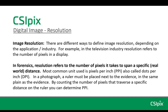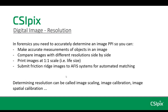In a photograph, a ruler must be placed next to the evidence in the same plane as the evidence, and then by counting the number of pixels that traverse a specific distance on the ruler, you can determine the PPI. In forensics, you need to accurately determine an image's PPI so you can make measurements of objects in an image.